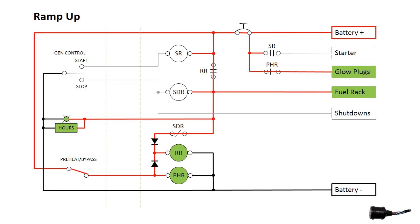We can now release the preheat and bypass switch, de-energizing the preheat relay and the glow plugs. The lower blocking diode prevents the preheat relay coil from being energized by the run relay latching circuit.